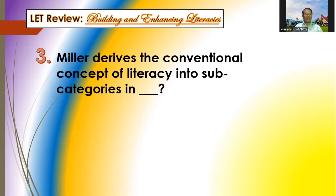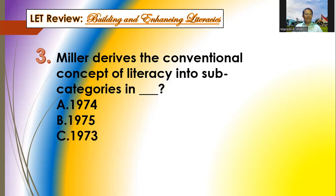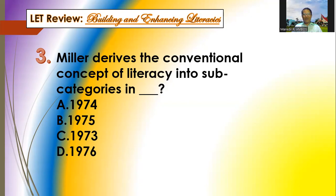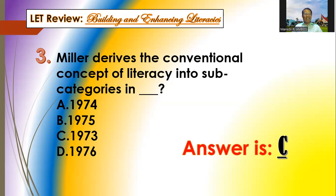Question number three: Miller derives the conventional concept of literacy into subcategories — in what year? A is 1974, B is 1975, C is 1973, and D is 1976. The answer is letter C — it's 1973.